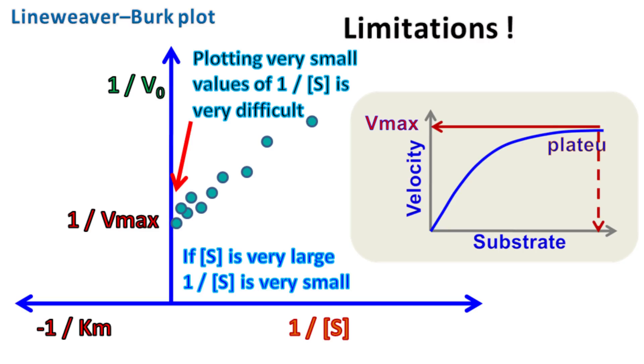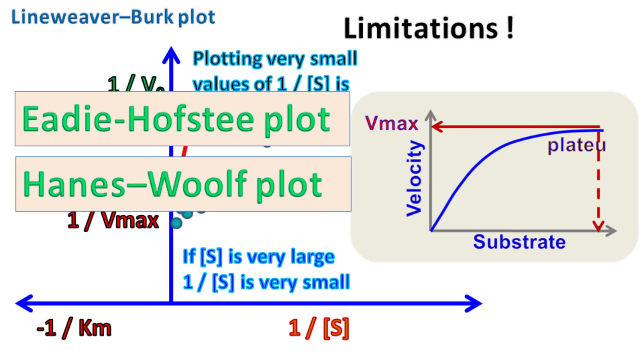Back in the days when there were no computers, the clustering of points due to extremely small values of 1 by S encouraged scientists to develop new graphs. These graphs were Hanes plot and Eadie-Hofstee plot.